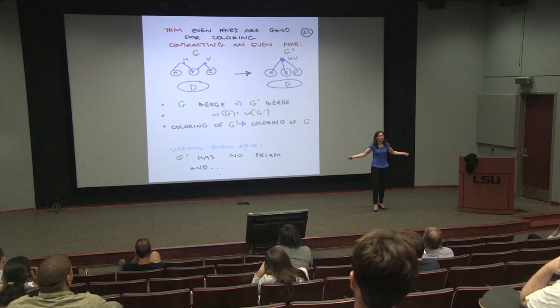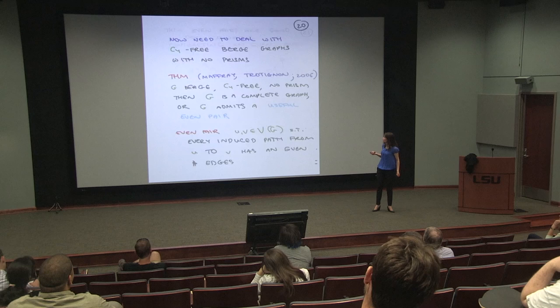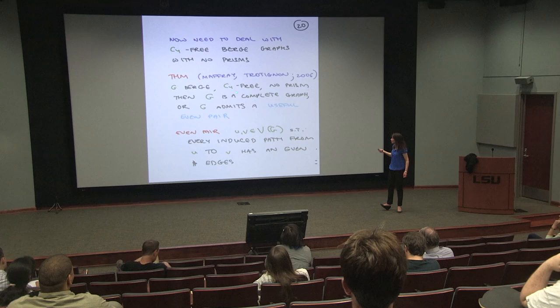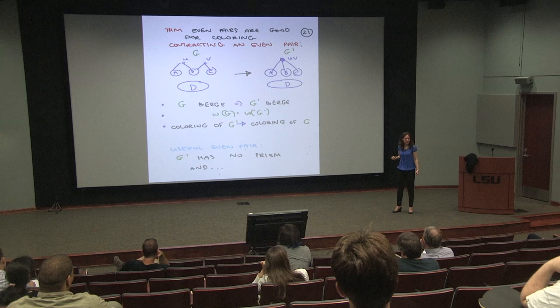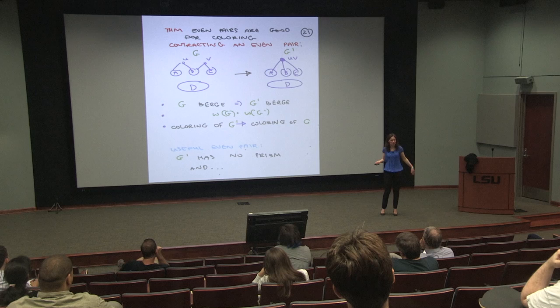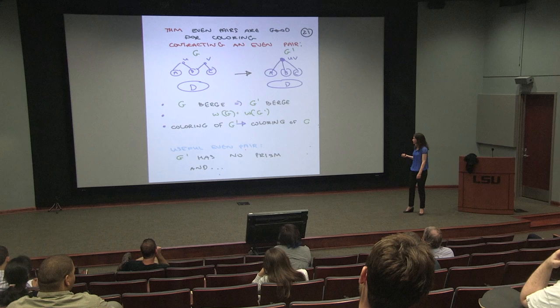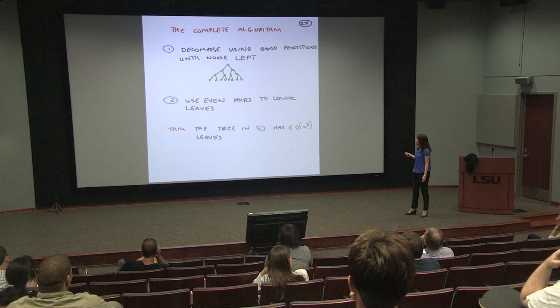The issue is you need to keep applying the theorem repeatedly, so 'useful' means the even pair is chosen so you stay in the right class and can keep applying the theorem. Maffray and Trotignon proved that in every C4-free Berge graph with no prism there is a useful even pair, and you can keep contracting until you reach a complete graph.